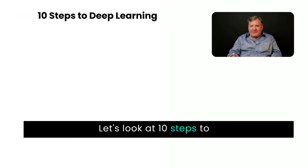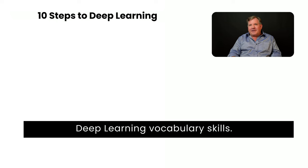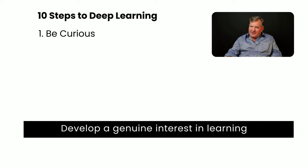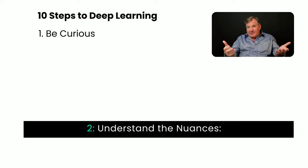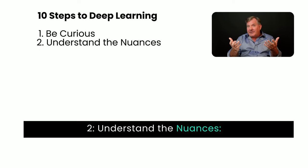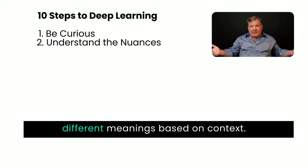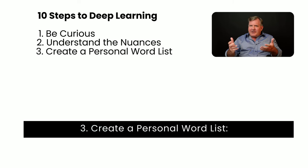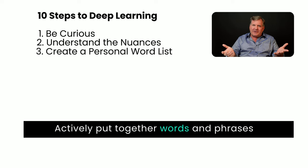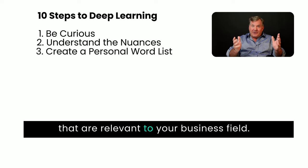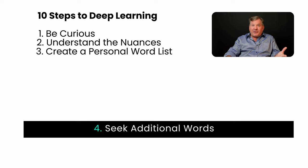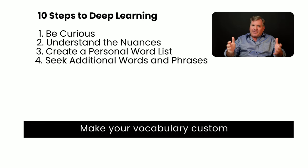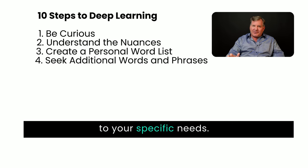Let's look at 10 steps to deep learning vocabulary skills. Step 1: Be curious. Develop a genuine interest in learning and understanding new words. Step 2: Understand the nuances. Recognize that words can have different meanings based on context. Step 3: Create a personal word list. Actively put together words and phrases that are relevant to your business field. Make your vocabulary custom to your specific needs.